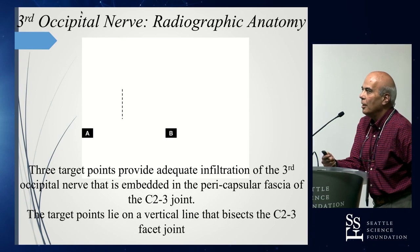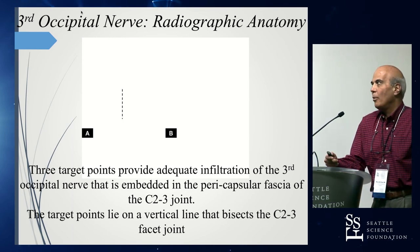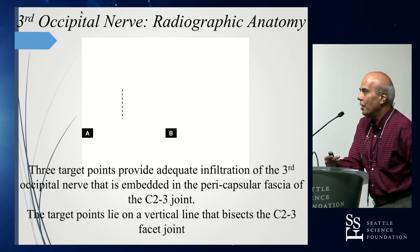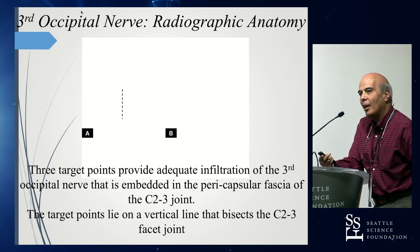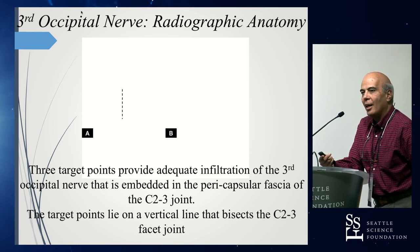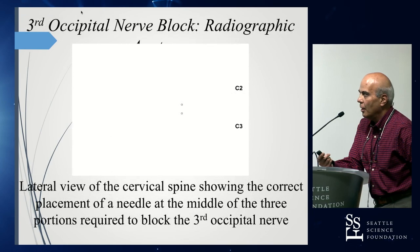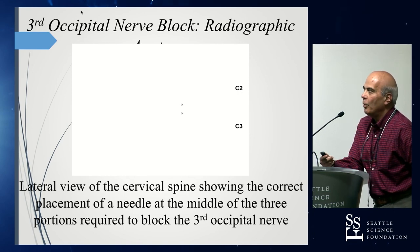For the third occipital nerve, there are usually three targets that can be blocked. They usually lie on an imaginary line that bisects the C2-3 facet joints, and you can place the needle in each one of those three areas along that particular line. Another image should show the correct placement of a needle for the third occipital nerve block.